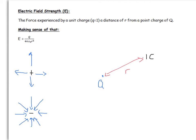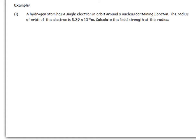Let's look at an example of force and field strength. A hydrogen atom has a single electron in orbit around a nucleus containing one proton. The radius of orbit of the electron is 5.29 × 10⁻¹¹ metres. We want to calculate the field strength at this radius. Starting as always by stating the equation: E = Q / (4πε₀r²).